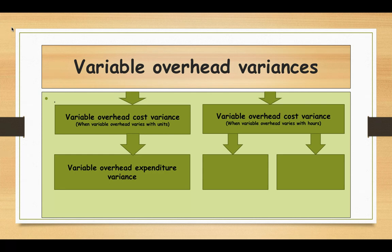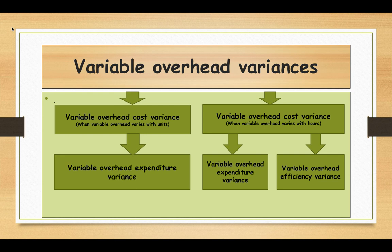But when variable overhead cost varies with hours, in addition to the variable overhead expenditure variance, we also need to calculate the variable overhead efficiency variance, because variable overhead cost varies with hours and efficiency is part of it. So if variable cost varies with hours, we calculate two variances: expenditure variance and efficiency variance.